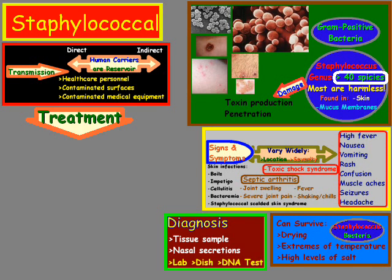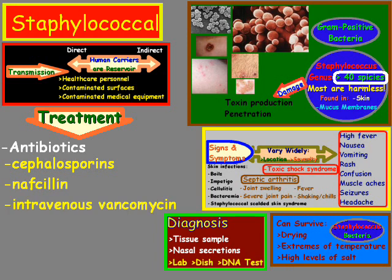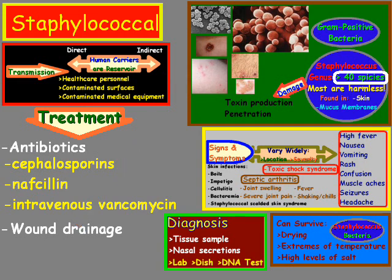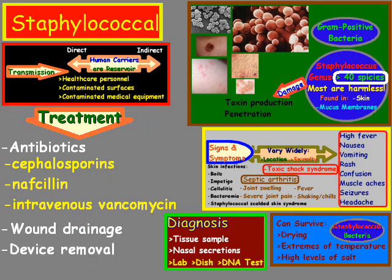When we look at treatment for staph, there are antibiotics such as cephalosporins, nafcillin, and intravenous vancomycin. One thing to keep in mind is that with all the 40-plus species of staph bacteria, some are resistant to different types of antibiotics, and it's on a case-by-case basis that changes over time. Another method of treatment is wound drainage. And lastly, there's device removal, which ties into the concept of bacteremia covered earlier.